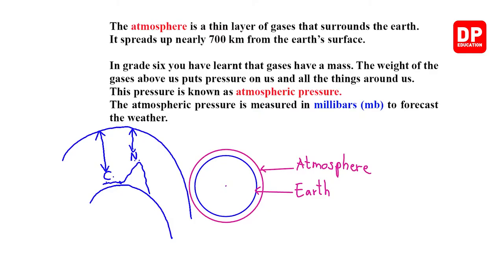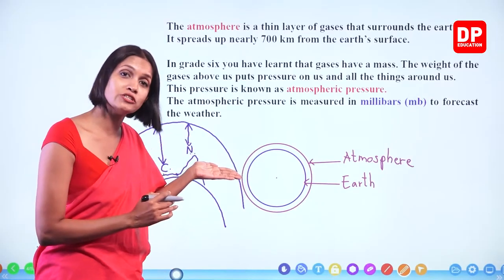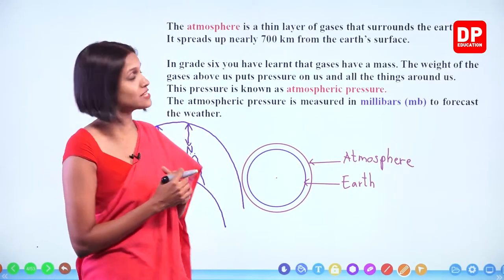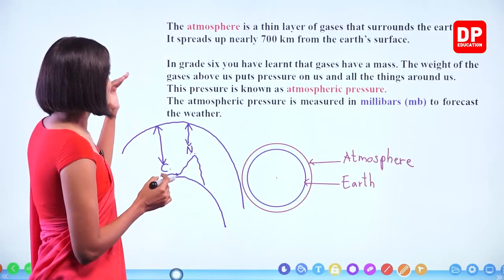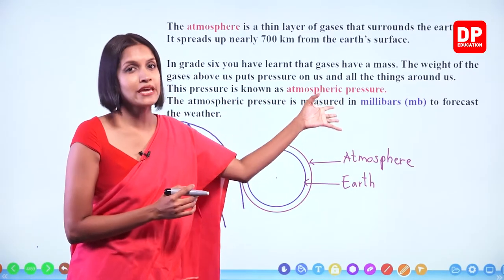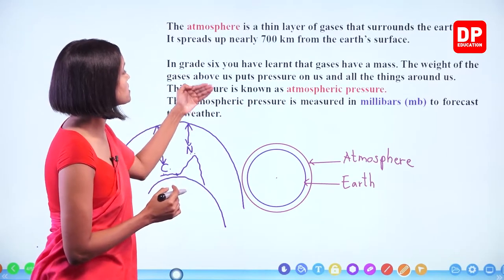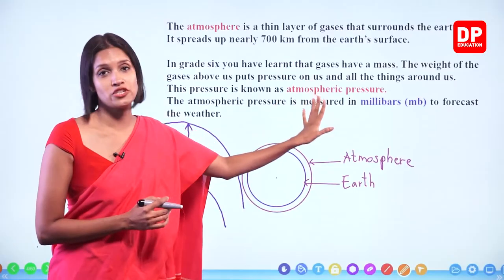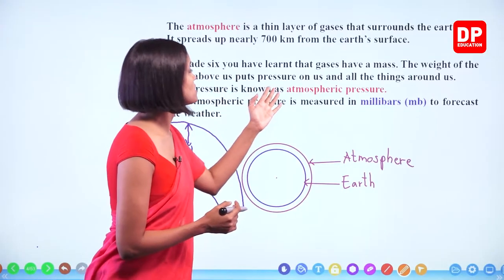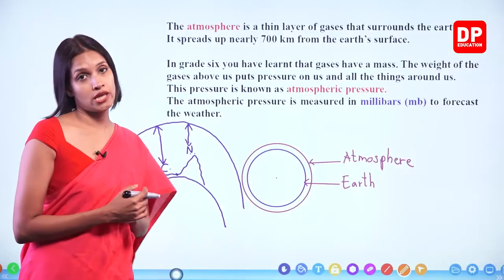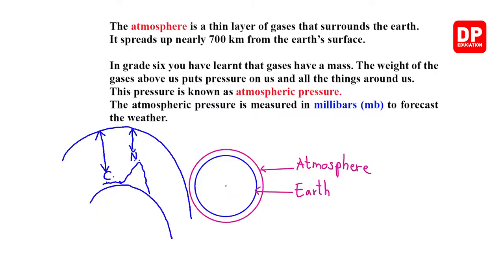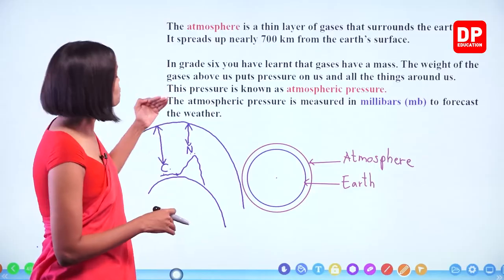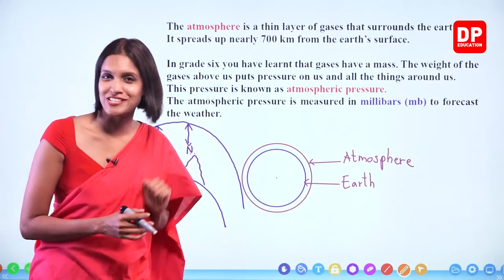This is why according to elevation and place, air pressure changes. This pressure is known as atmospheric pressure or simply air pressure. The atmospheric pressure is measured in millibars to forecast the weather. In upper grades, you will learn more about how to measure air pressure.